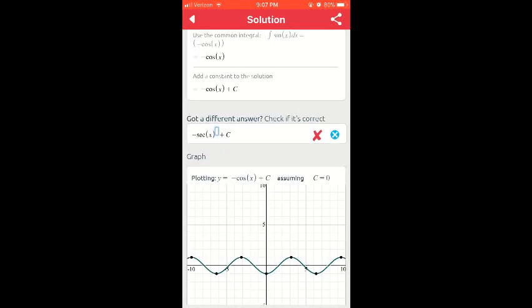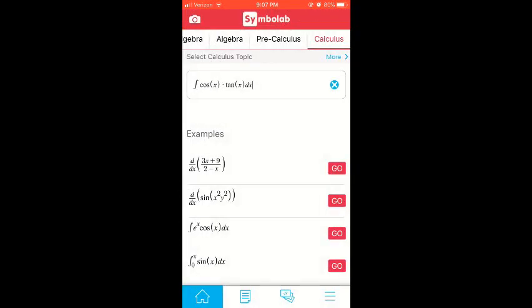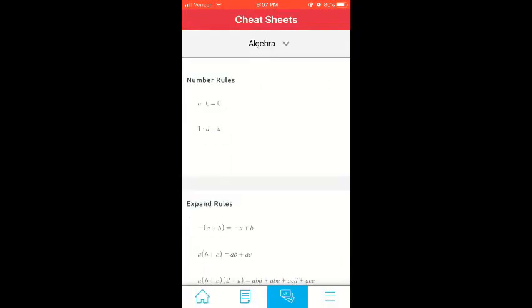Another handy feature that Symbolab offers is the cheat sheets. To find the cheat sheets, click the cheat sheet icon located next to the notebook icon.